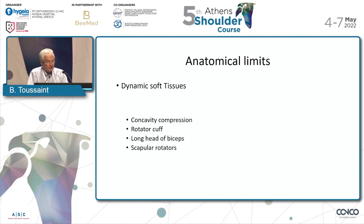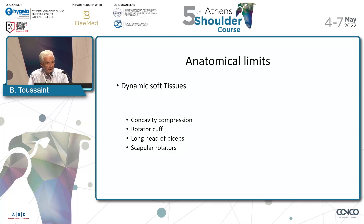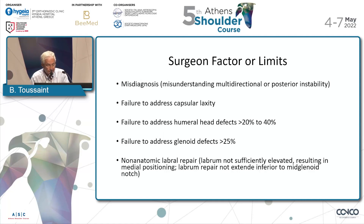Anatomical limits also include dynamic soft tissue factors: concavity compression by the different muscles, the rotator cuff, and the long head of biceps. The rotator cuff is very important — Magnusson first described the insufficiency of the subscapularis in shoulder stability. If you have a tear of the subscapularis, you can have shoulder instability, and it is necessary to repair the subscapularis as well to achieve the best stability.